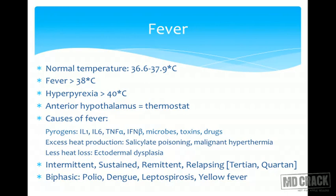Endogenous pyrogens include interleukins, interferons, and TNF-alpha. Exogenous pyrogens include microbes, various toxins, and drugs. Salicylate poisoning and malignant hyperthermia are two drug-induced hyperthermias with excessive heat production. In conditions like ectodermal dysplasia and cystic fibrosis, sweat production is impaired, so these children cannot dissipate heat and develop fever.